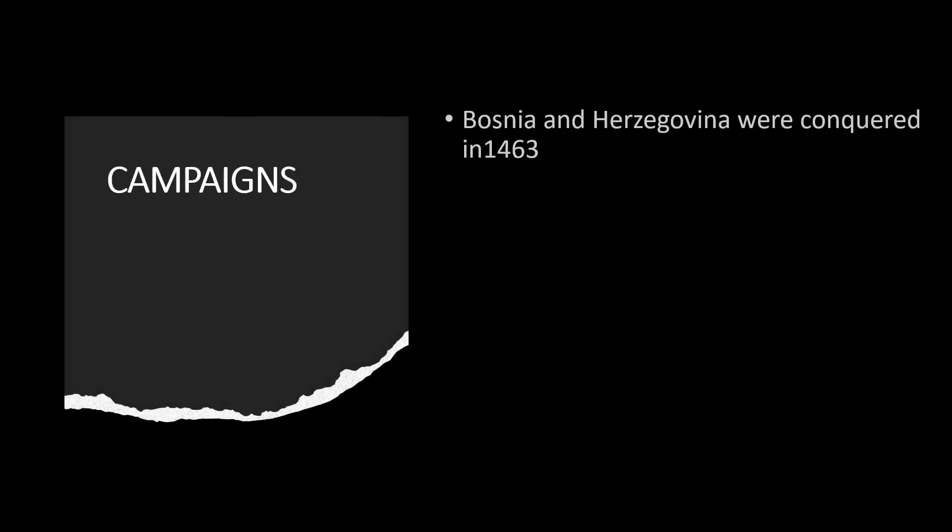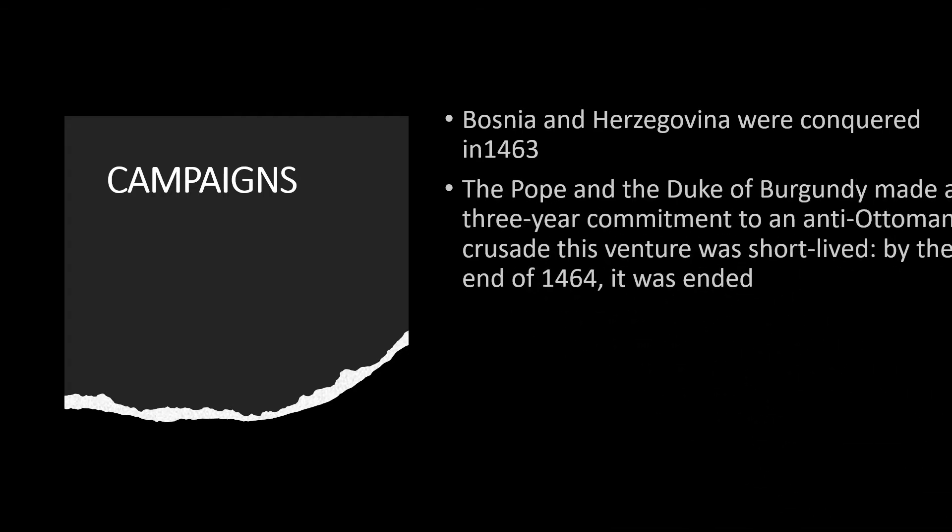In 1463, the Ottoman Empire under the leadership of Muhammad al-Fatih conquered Bosnia and Herzegovina. After this conquest, the Pope and the Duke of Burgundy made a three-year commitment to an anti-Ottoman crusade, because the Ottomans were conquering many Christian countries. However, this crusade was short-lived and ended by late 1464 without any good results for the Christians.